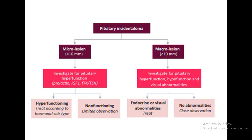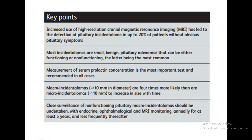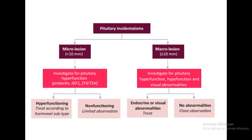This flow chart — I believe from the European Society of Endocrinology — divides incidentalomas by size: micro is less than 10 mm and macro is more than 10 mm. For macro, investigate for pituitary hyperfunction and visual abnormalities; if endocrine or visual abnormalities are present, treat; if no abnormalities, close observation. For micro, if hyperfunctioning, treat according to hormonal subtype; if non-functioning, limit observation. This is an easier chart to remember — divide by size, then look for pituitary hyperfunction.